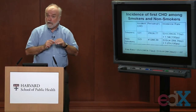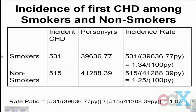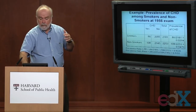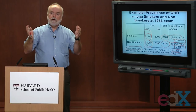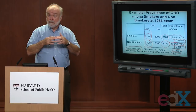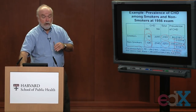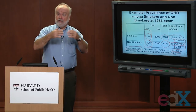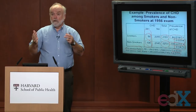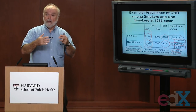Here's another table from the Framingham Heart Study, looking at the incidence of developing coronary heart disease over 24 years of follow-up. What's limited here is we're talking about the first development of coronary heart disease — meaning I've eliminated anybody who had pre-existing heart disease at the 1956 exam. Those 86 plus 108 individuals who already had coronary heart disease in 1956 are no longer at risk for developing it as a first event.